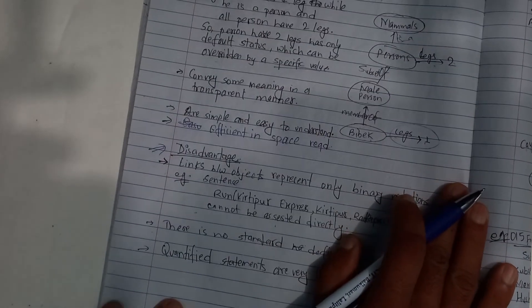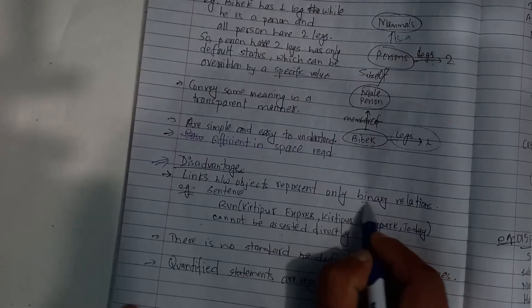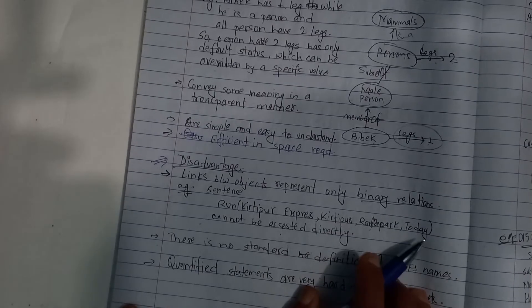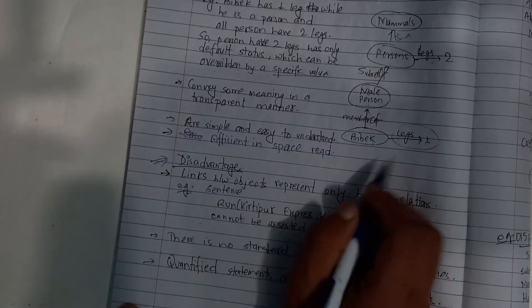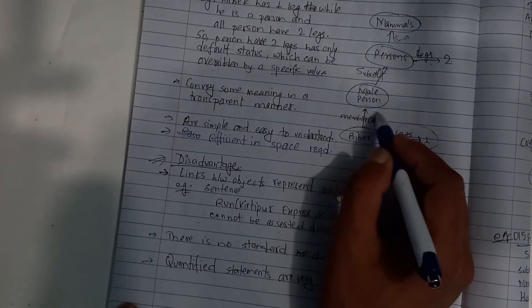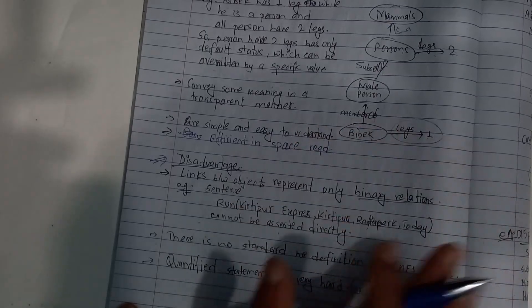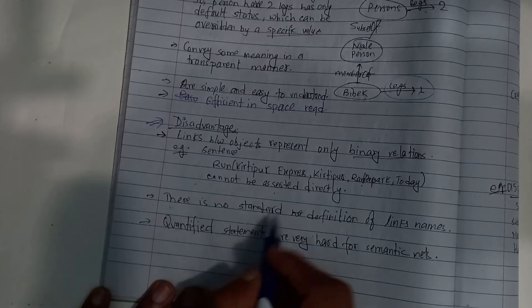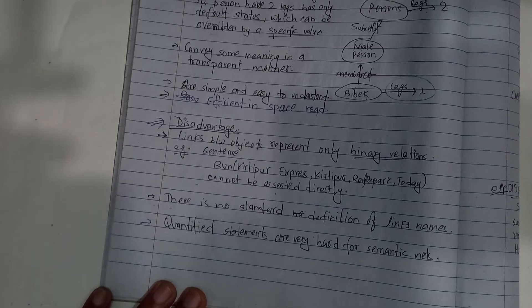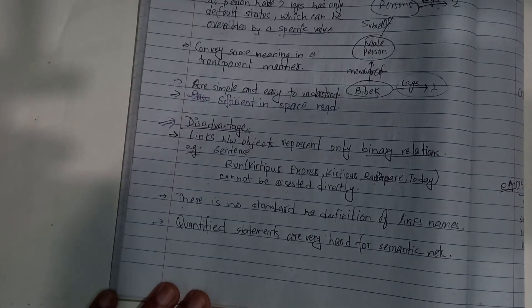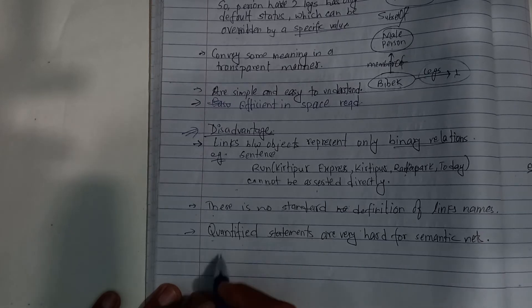The disadvantages are: Links between objects represent only binary relations. There is no standard definition of link names. Quantified statements are very hard to represent in semantic nets.